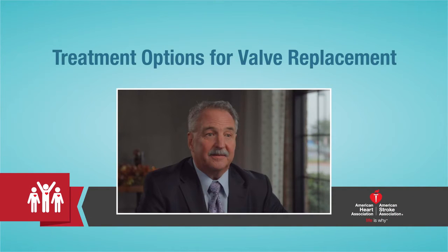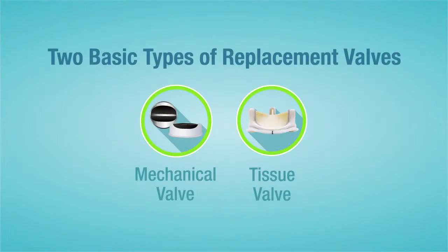Let's talk about what happens when we replace a valve. We can break that down into two things, because there are two basic types of valves that we use to replace a human valve. One is a tissue valve and the other is a mechanical valve.